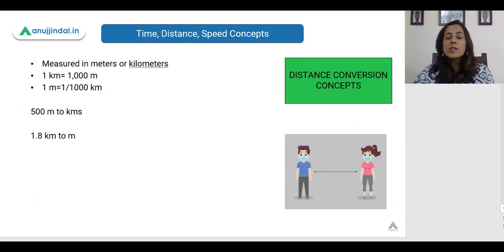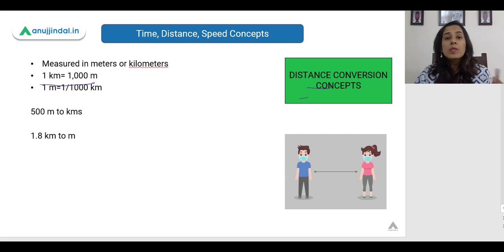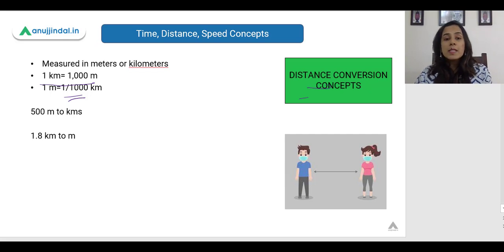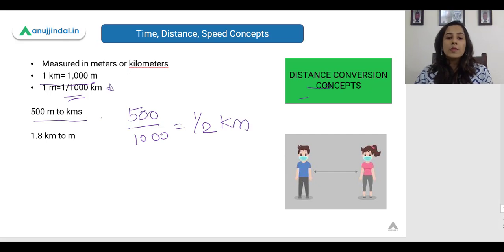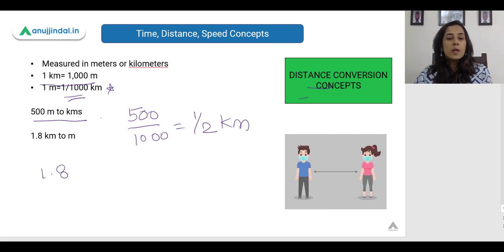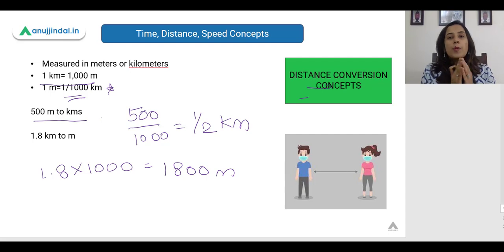Now let us see distance conversion concepts. Generally distance is given in kilometers or meters. So 1 kilometer is 1000 meters, and if we convert 1 meter into kilometers, we just divide by 1000. To convert 5500 meters to kilometers, we divide by 1000 and get 5.5 kilometers. To convert 1.8 kilometers into meters, we multiply by 1000 and get 1800 meters.